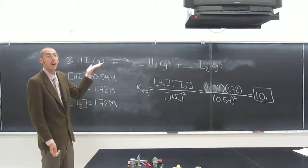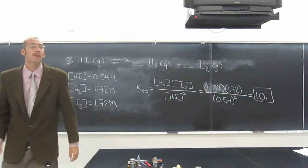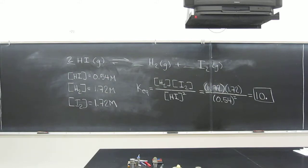If it's above 1, then it means that the products are favored, and that's a good reaction. Because you want to produce your products. That's what you're doing your reaction for. Is everybody cool with that?